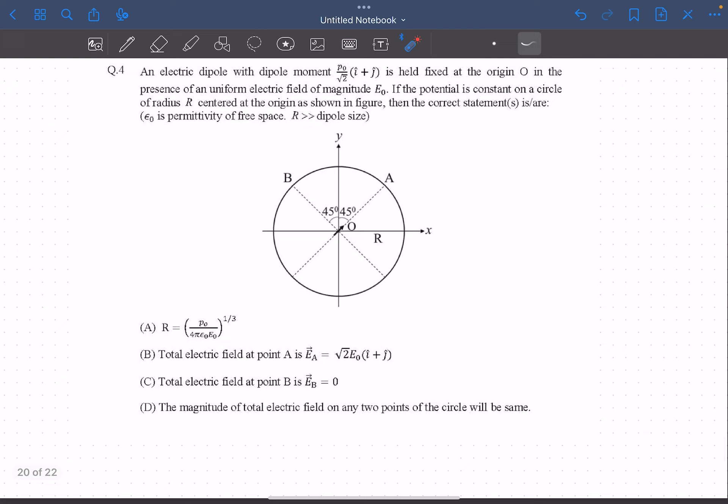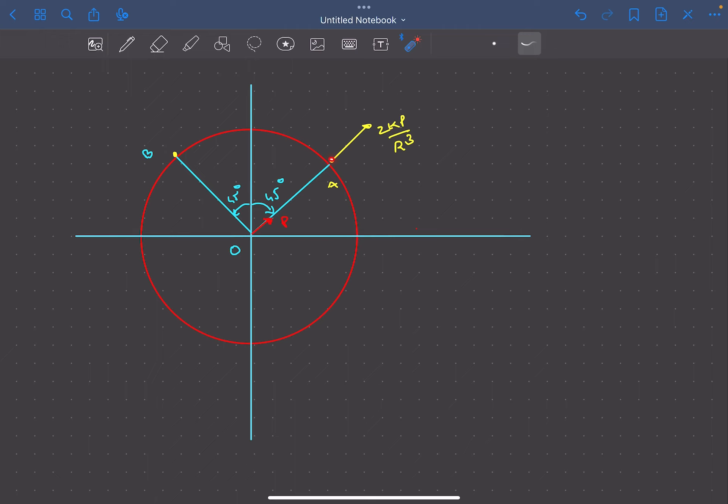The question mentions that we have an external electric field that is constant with magnitude E₀. From observing point A, we know that the electric field due to the dipole is in this direction, which means we can conclude that the external electric field E₀ must also be along the same direction.